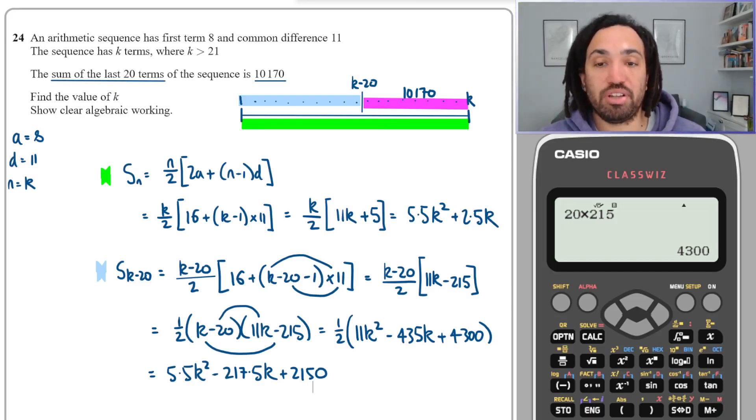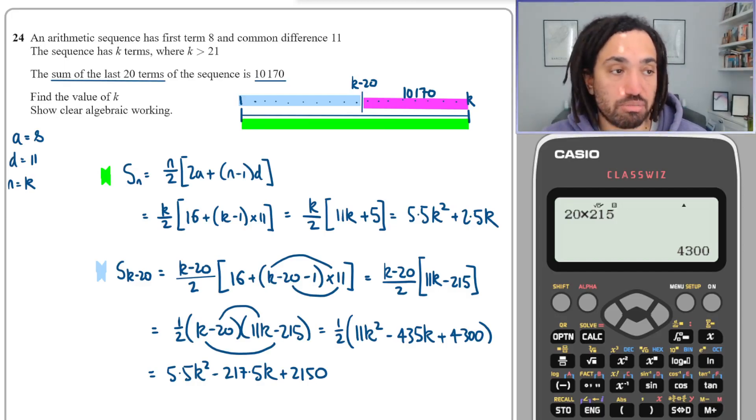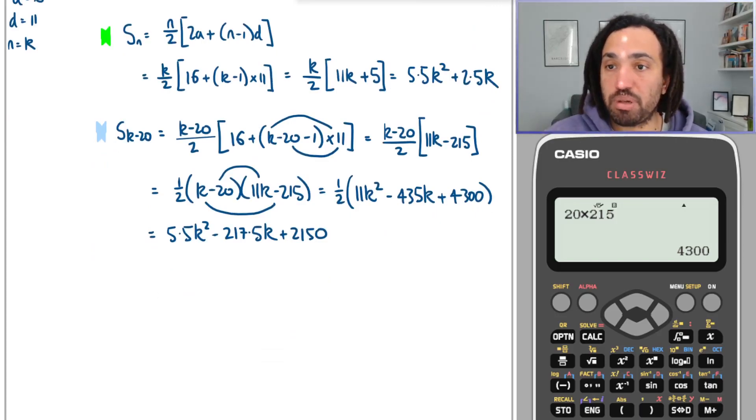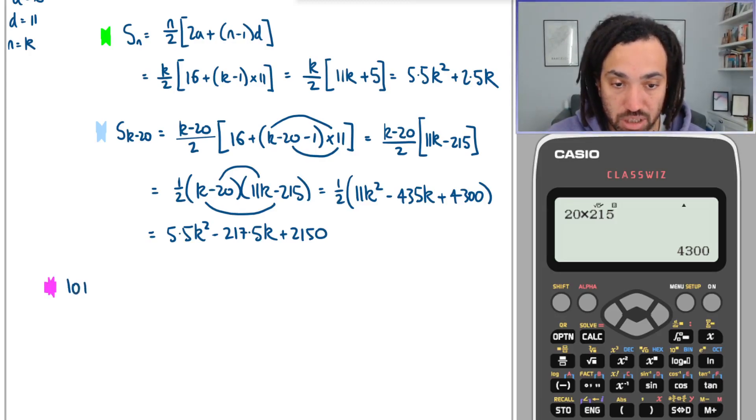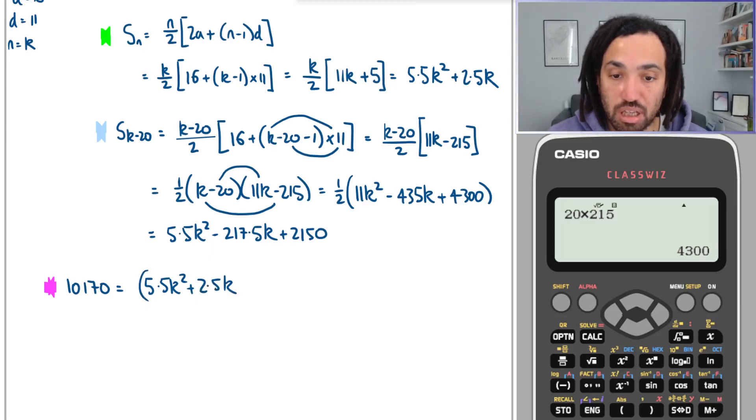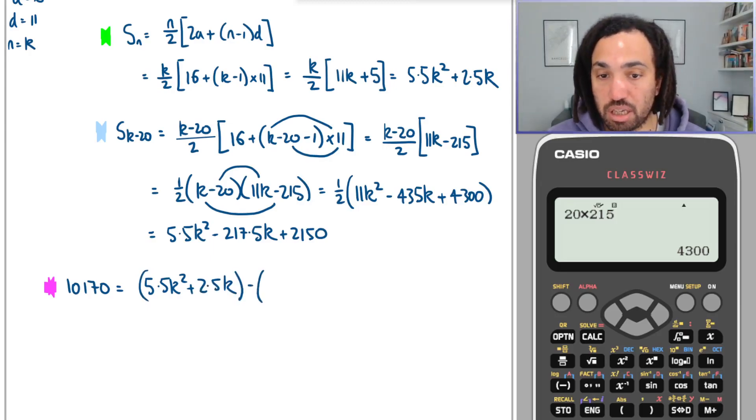Okay, great. So now I have the expression for the green and for the blue. I can now write an expression for the purple, because clearly you can see from this diagram that the purple is equal to the green minus the blue. So that's what I'll do. So I'm told that the purple in the question is 10,170, and that's going to equal the green, which is this, minus the blue, which is this.